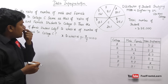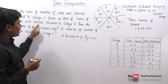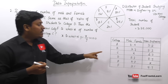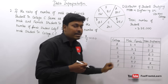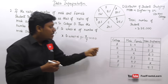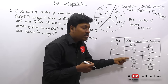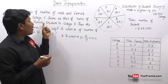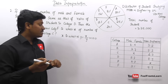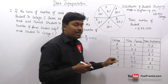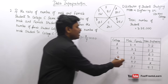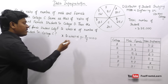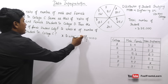The table doesn't give college C's male-to-female ratio, but the question states it's the same as college D's ratio, which is 5:3. So we can confidently say college C's male-to-female ratio is also 5:3. Our numerator x is female students in college F, and denominator y is male students in college C.